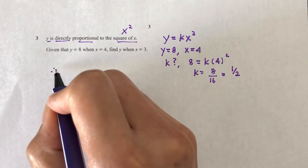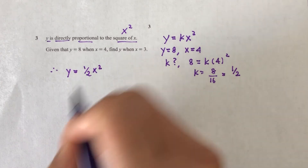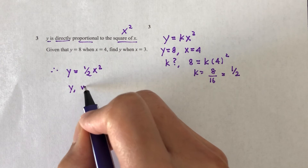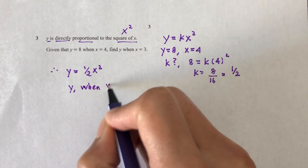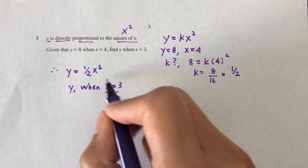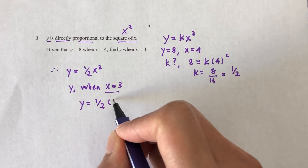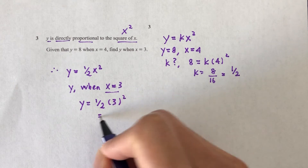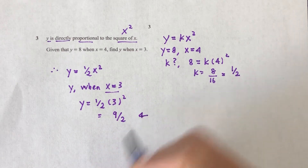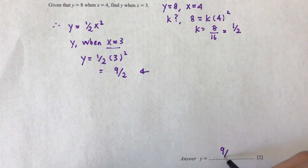So now the equation is y equals one-half x squared. We have to find y when x equals 3, so we replace x in the equation: y equals one-half times 3 squared, which is 9 over 2. That is your answer — y equals 9 over 2.